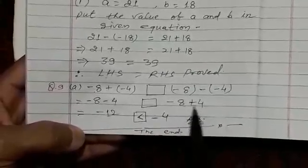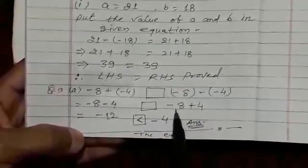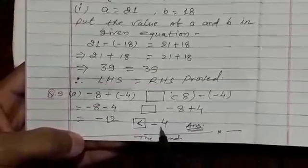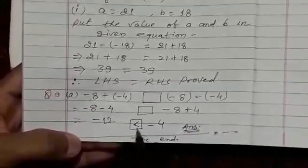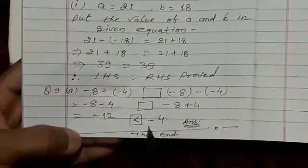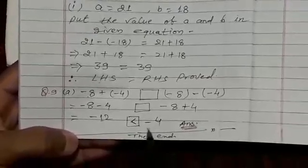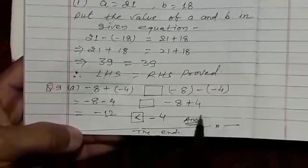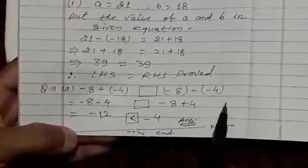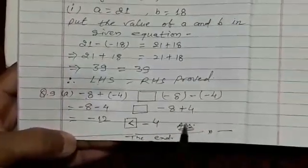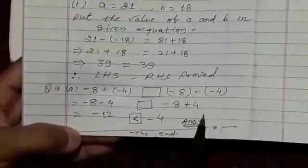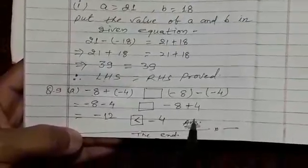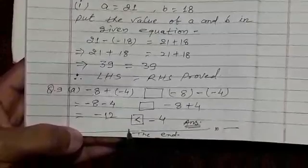Here opposite sign. So it is subtracted, minus 8, plus 4, becomes minus 4, and we know, in negative number, a smaller number, is greater than bigger, because when we go from right to left on number line, then value of this number, value of numbers, becomes decreasing, decreasing in order.